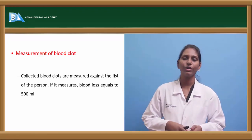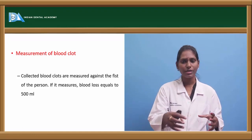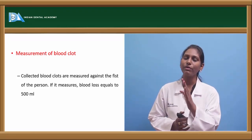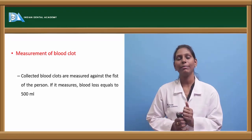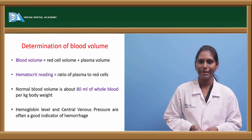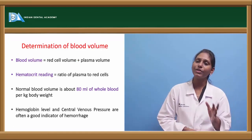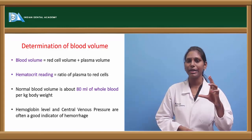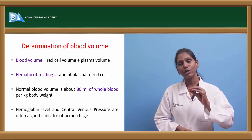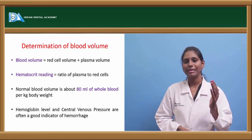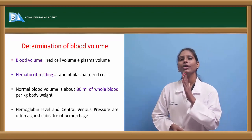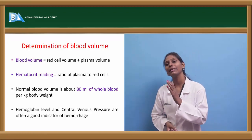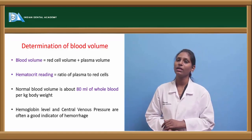Measurement of blood clots is another common method — collected clots measured against the patient's fist indicate approximately 500 ml of blood loss if equal in size. Blood volume can also be determined using a hematocrit, which gives the ratio of plasma to red cells, helping calculate total blood volume. Normal blood volume is about 80 ml of whole blood per kg body weight. Hemoglobin and central venous pressure are also good indicators.